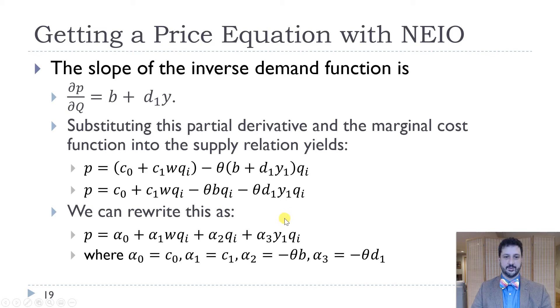We can rewrite this just with parameters alpha, alpha 1, alpha 2, alpha 3 that we can actually estimate econometrically. If we have pricing data and we have wage data and quantity data, and then this Y1, which we said might be for instance consumer income, we can estimate these alphas and then eventually solve for theta using the alphas.